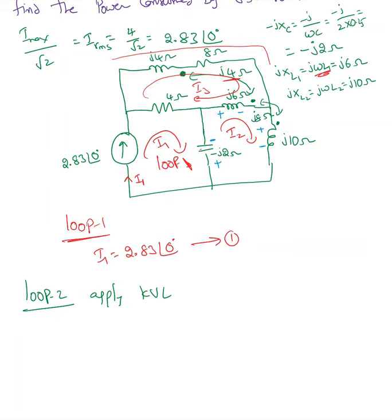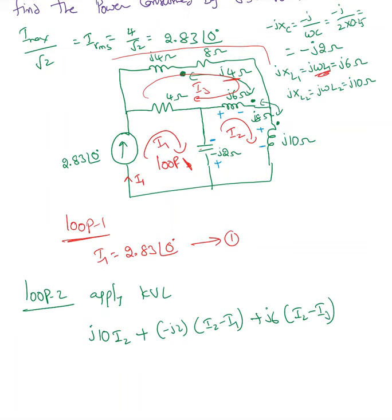Now I'll talk about the mutual inductance, but first let me write down the self-induced voltages. Starting with j10, the self-induced voltage terms are: j10·I2, plus (−j2)·(I2 − I1), plus j6·(I2 − I3). Those are the three self-induced voltage terms. Now we address the mutual inductances.